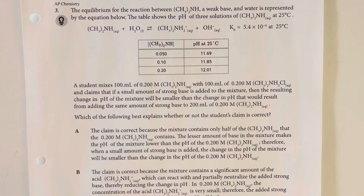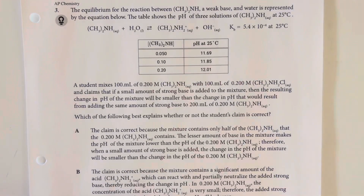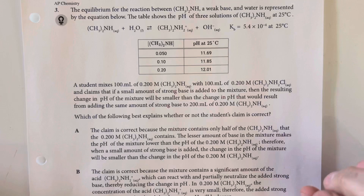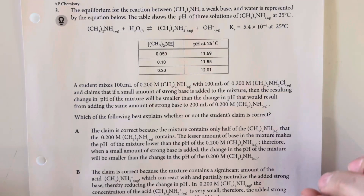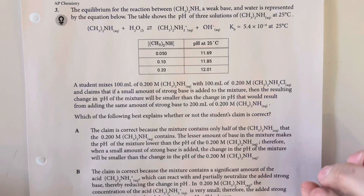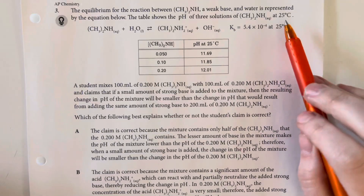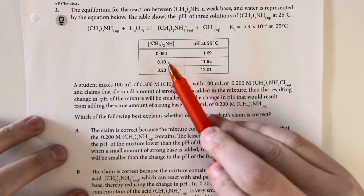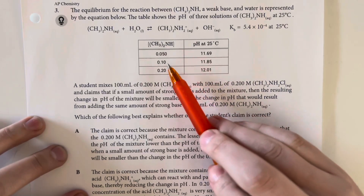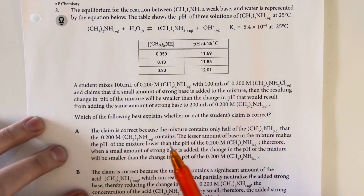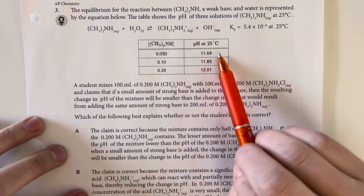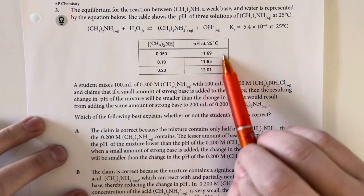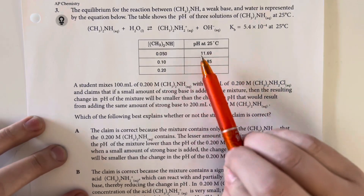The equilibrium for the reaction between dimethylamine, a weak base, and water is represented by the equation below. The table shows the pH for three solutions of dimethylamine at 25 degrees Celsius. We can see that we are increasing our concentration of dimethylamine, doubling it each time, and we are not having a large influx of change for our pH.